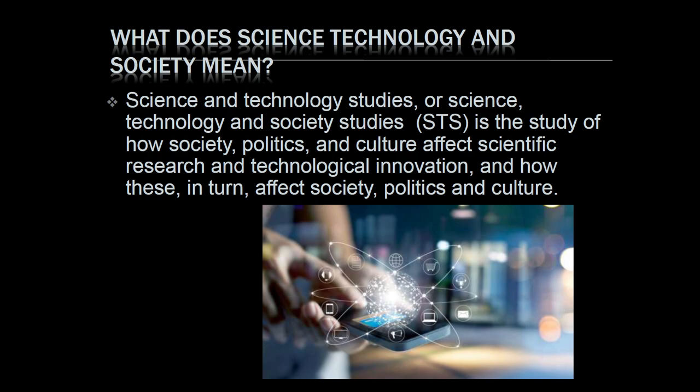What does Science, Technology and Society mean? STS — Science and Technology Studies, or Science Technology and Society Studies — is the study of how society, politics, and culture affect scientific research and technological innovations, and how these in turn affect society, politics, and culture. In our early years of education, we saw science and technology as producing only good results — the products available in the market.